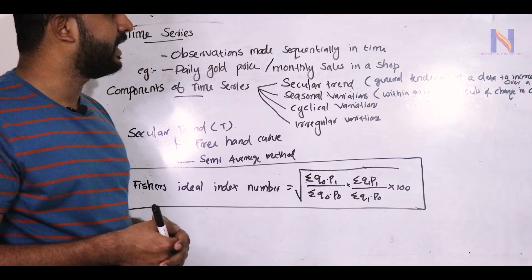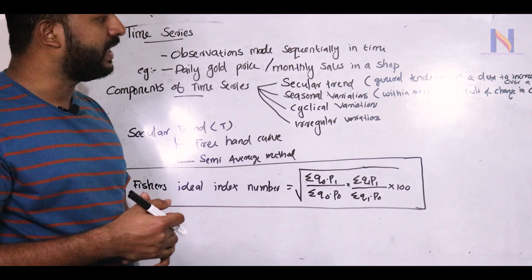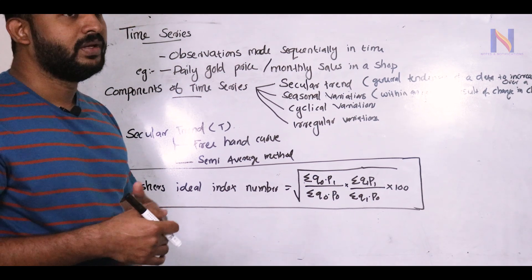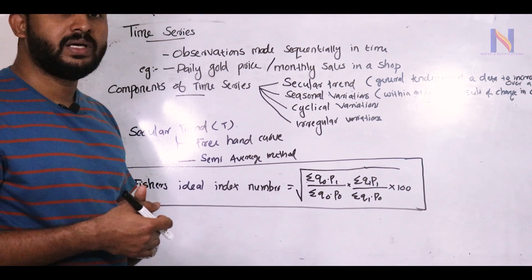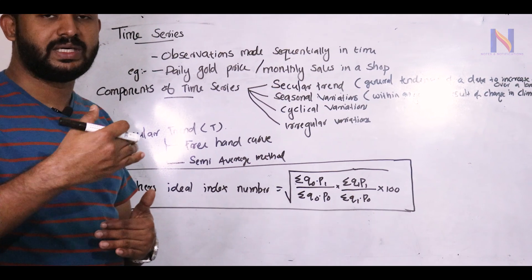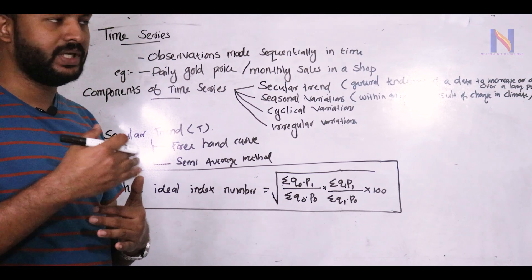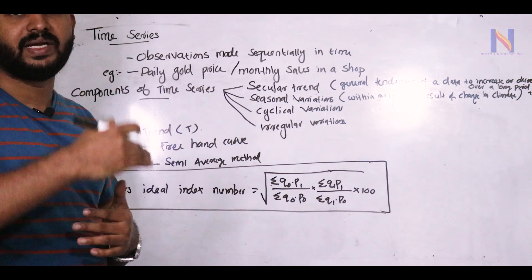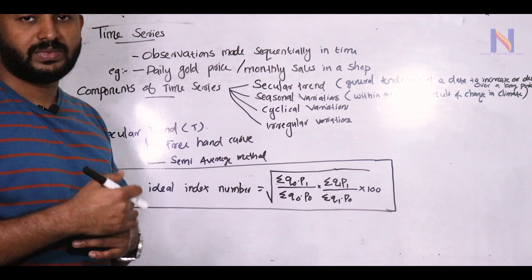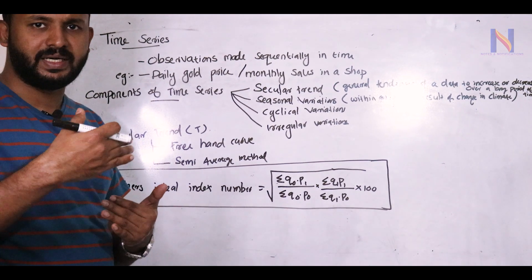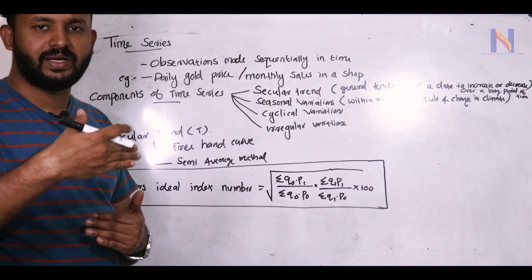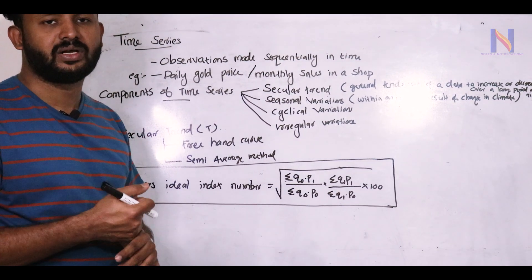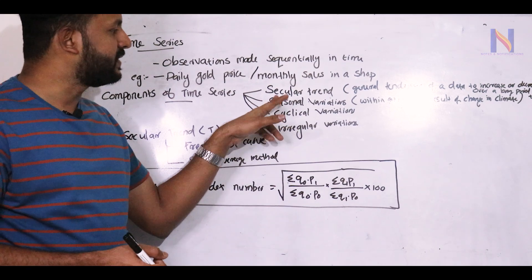If you look at secular trends, the general tendency of data to increase or decrease over a long period of time. For example, an employee's salary over long years of time shows a general increasing tendency.